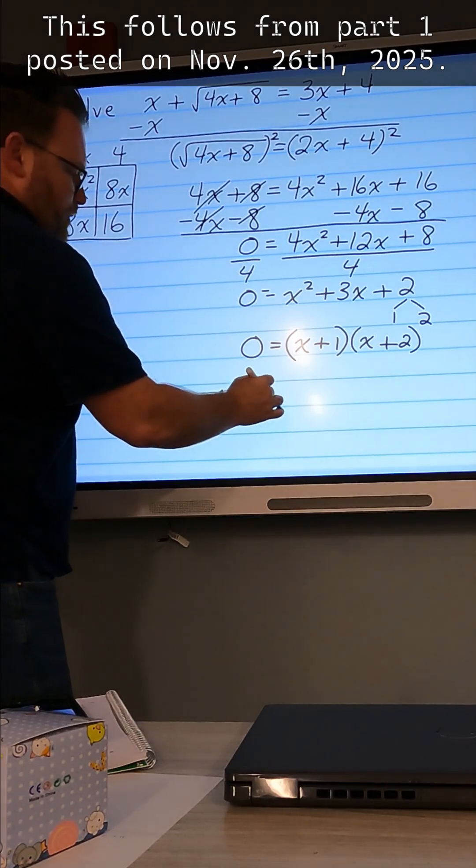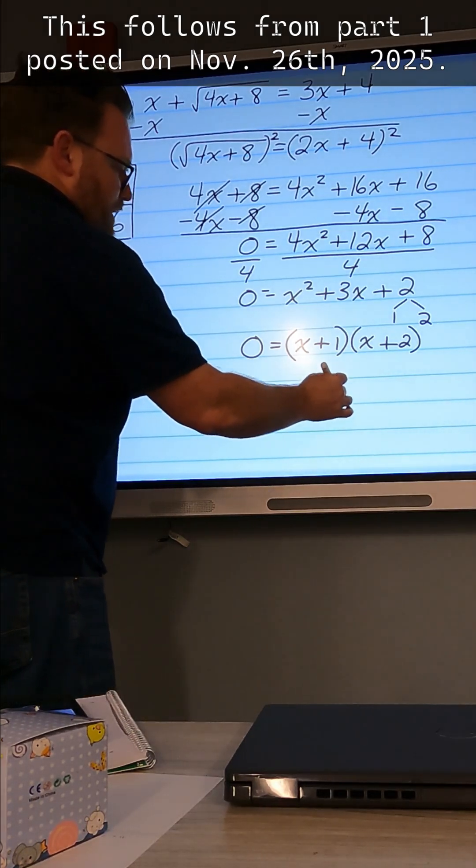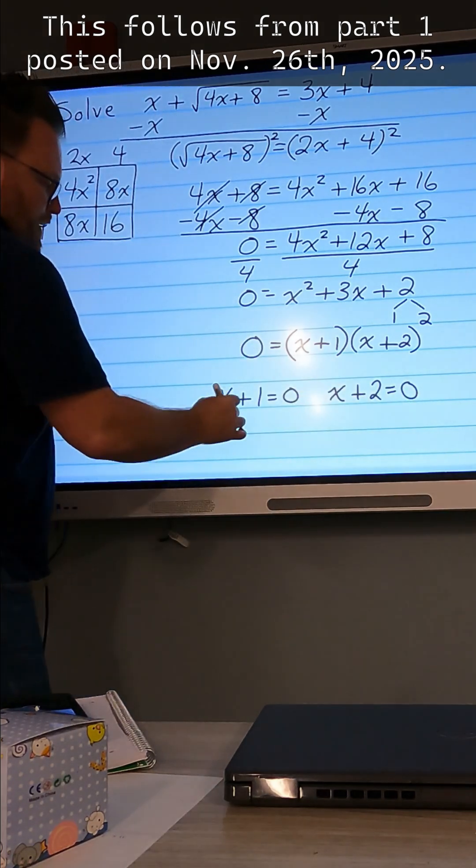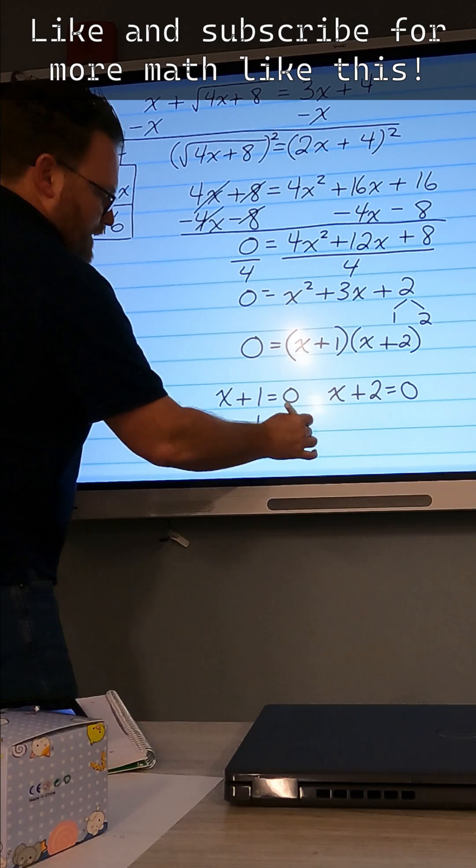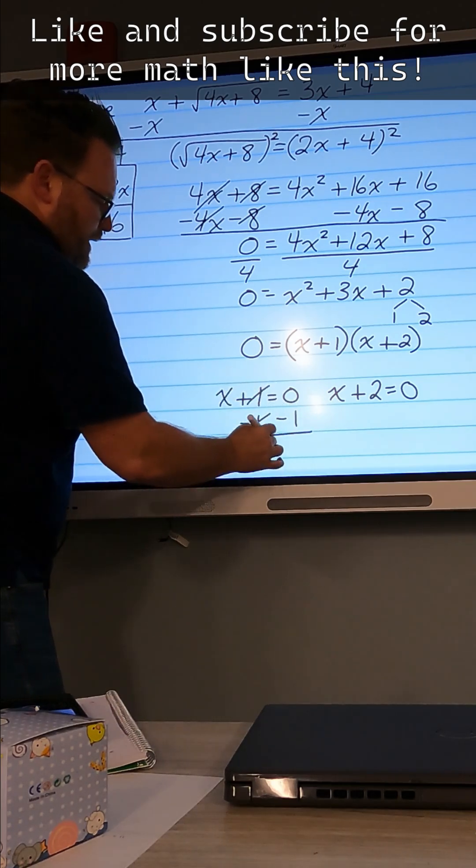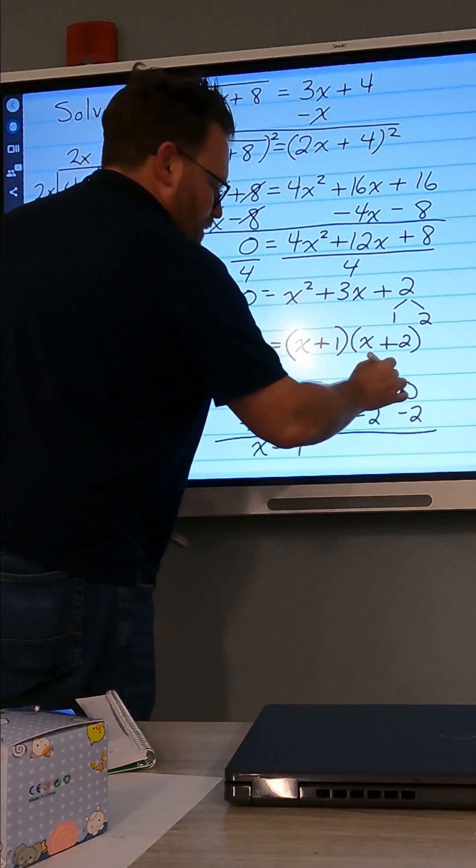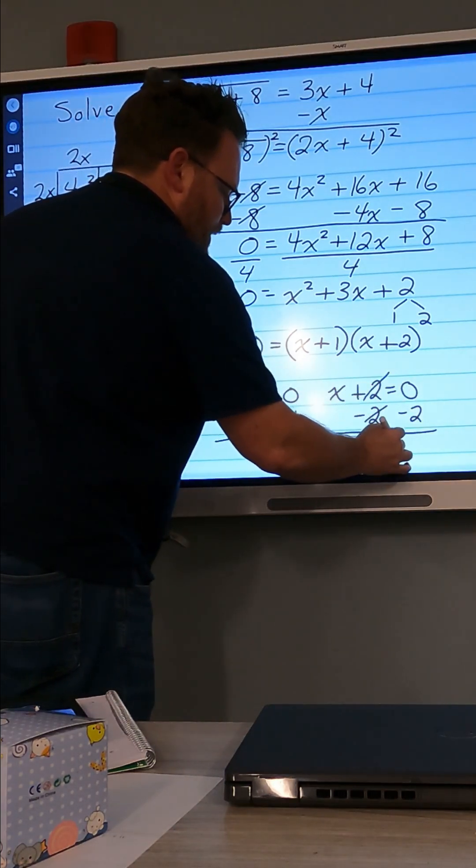By setting x plus 1 equal to 0 and solving for x, and x plus 2 equal to 0 and solving for x. This one I'll subtract 1 from both sides, and I'll get x equals negative 1. Here I'll subtract 2 from both sides and get x equals negative 2.